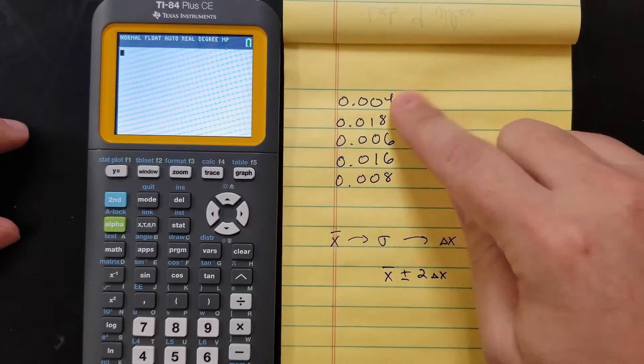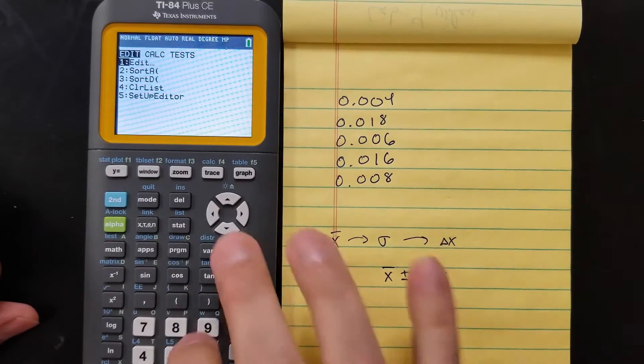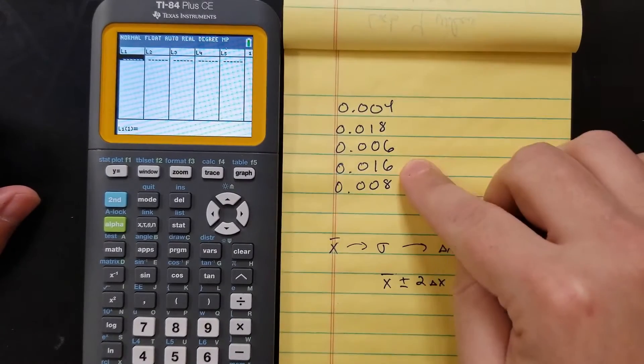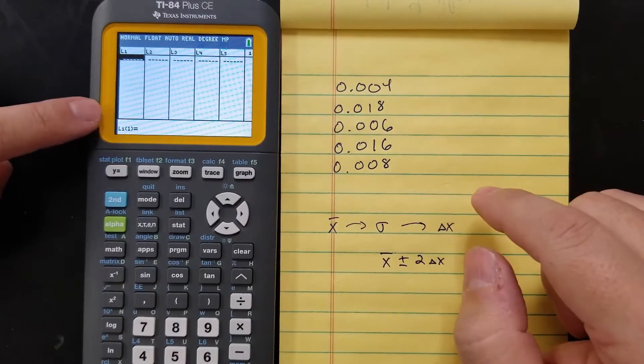So I'm going to show you how to do that. Here's my data. You're going to go to STAT and then EDIT, the first one. Hit ENTER, and then you're going to enter all of this data into L1.